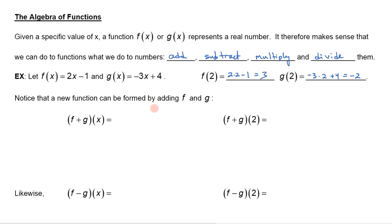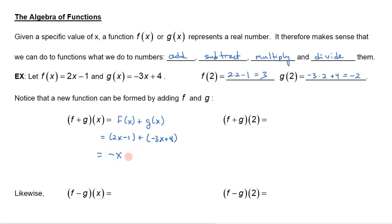Notice we can come up with a new function by simply adding f and g. The notation (f+g)(x) means simply f(x) plus g(x). So that would be 2x minus 1 plus negative 3x plus 4. We just add those together, combine like terms, and we get negative x plus 3. Now if I wanted to find (f+g)(2), I could plug 2 into this new function: negative 2 plus 3, which is 1.